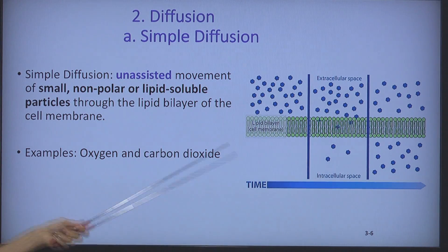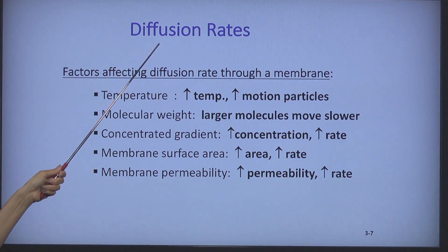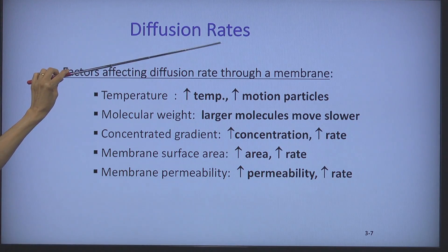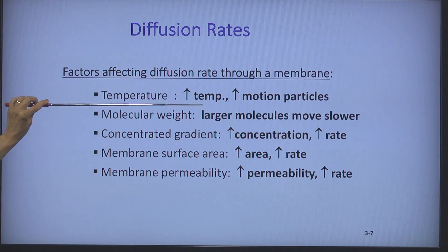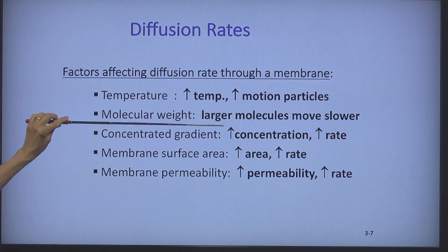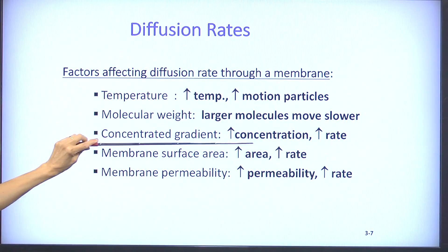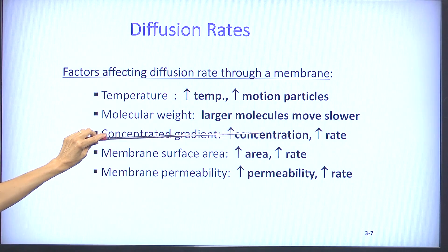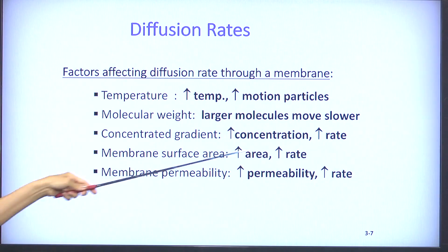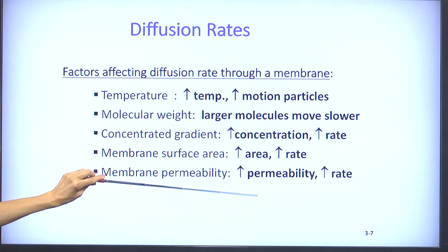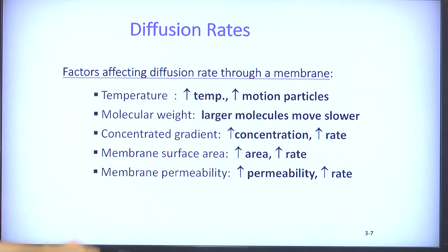Not all substances move at the same rate — certain factors affect the rate of diffusion. Increasing temperature will increase diffusion. Larger molecules will be very slow to diffuse. Increasing concentration increases diffusion. A larger surface area of membrane allows substances to diffuse faster, and the greater the membrane permeability, the greater the rate of diffusion.